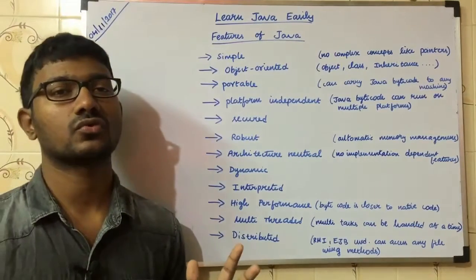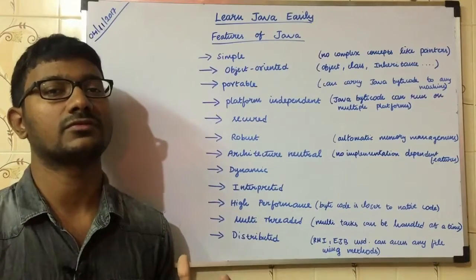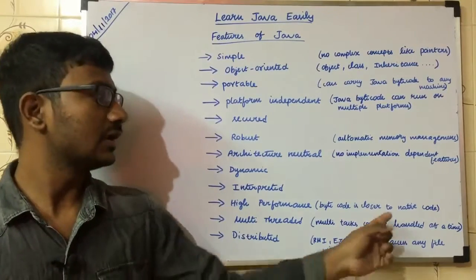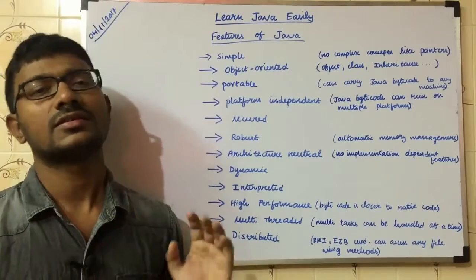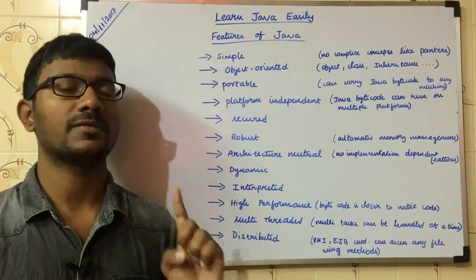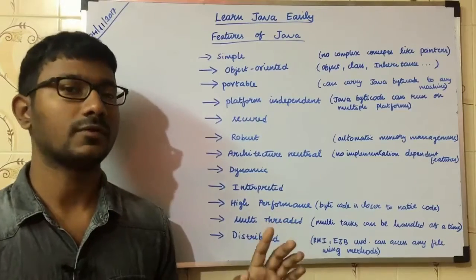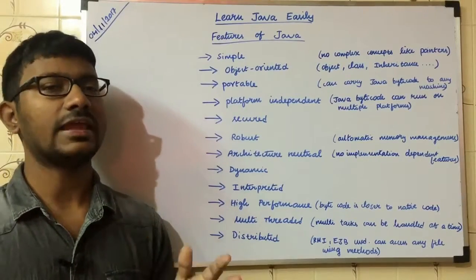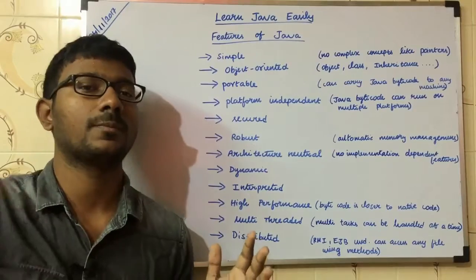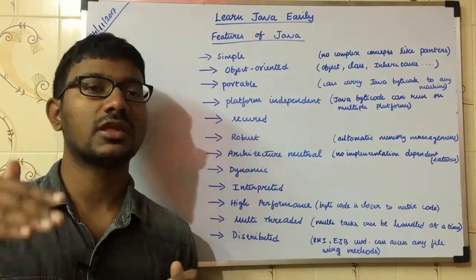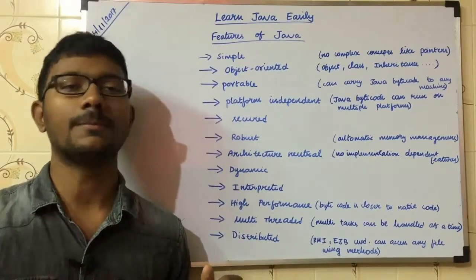Once you have source code in a .java file, it is compiled to a .class file — bytecode. That bytecode is then converted closer to native code. When compared to C/C++, Java's performance is nearly equal. The performance of C/C++ and Java is comparable.